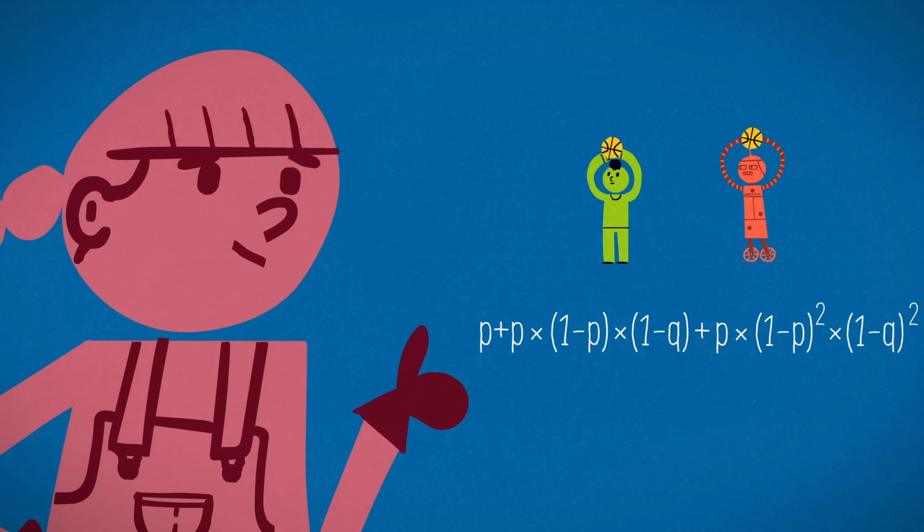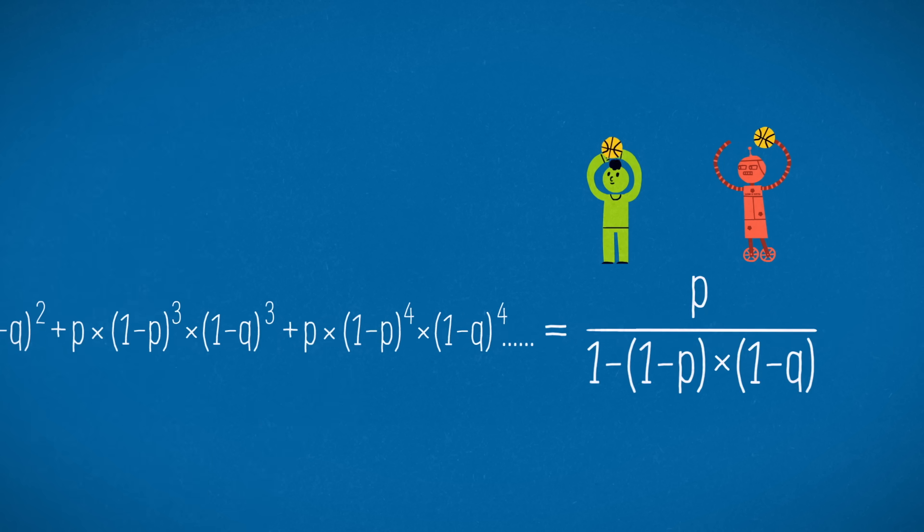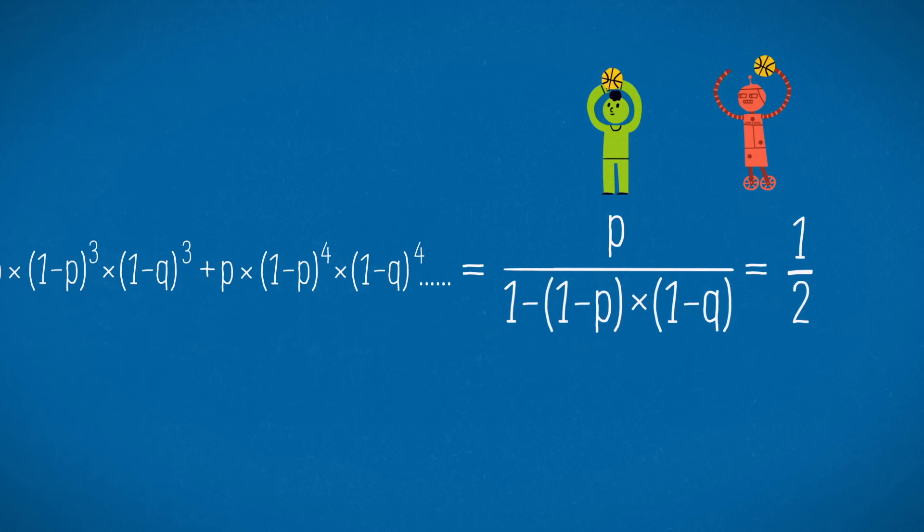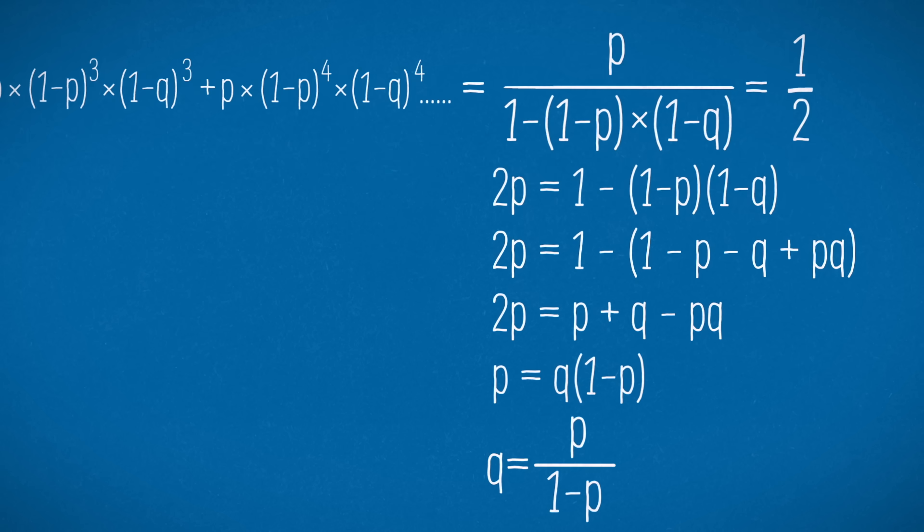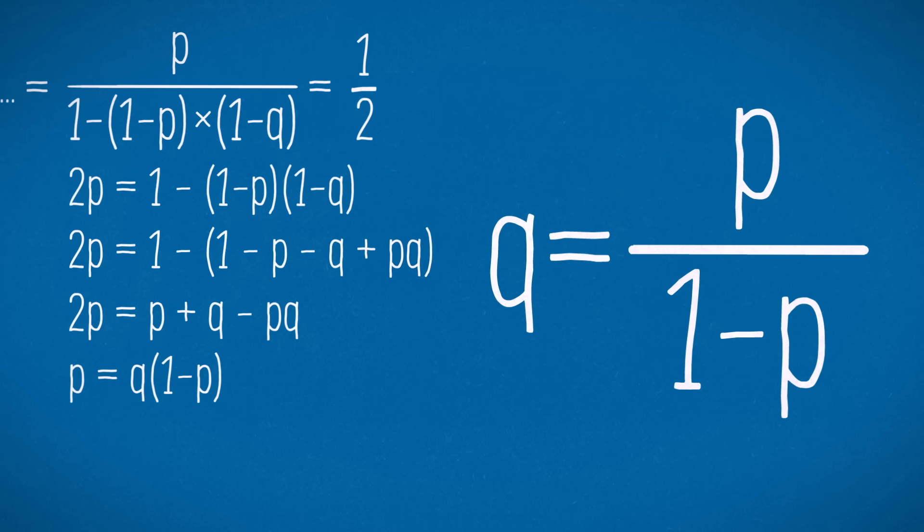Since the first number in the series is P, and the ratio is this product that's less than 1, the sum will be P divided by 1 minus the ratio. We want this sum to be 1 half. Using some algebra to solve for Q, we find that Q should equal P divided by 1 minus P.